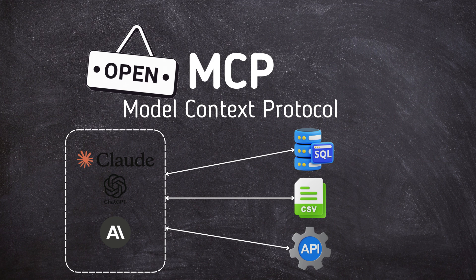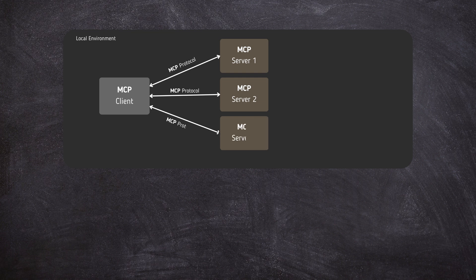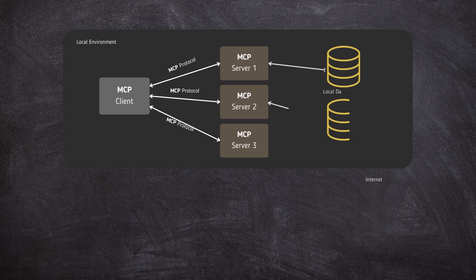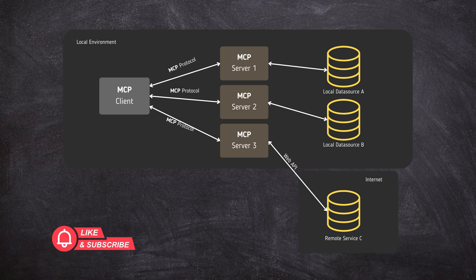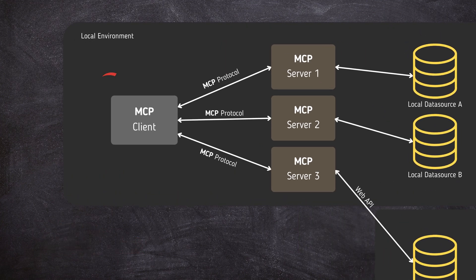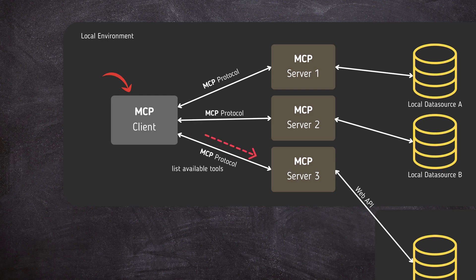MCP uses a client-server architecture to connect AI models to external tools and data sources in a standard way. The MCP client is a component embedded within an AI application, such as a chatbot, IDE assistant, or automation agent. Its main job is to manage the connection to one or more MCP servers. It sends structured requests — like "list available tools" or "fetch this data" — to the MCP server and receives structured responses.